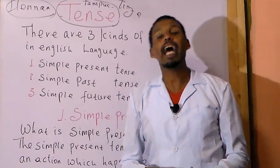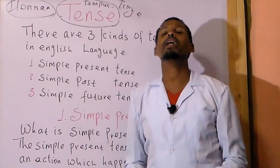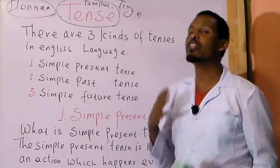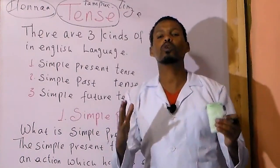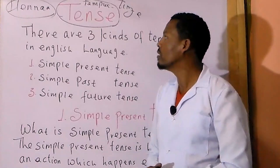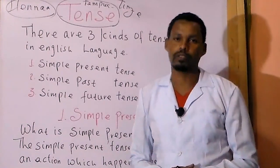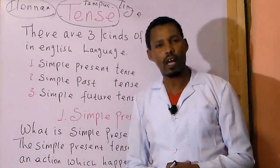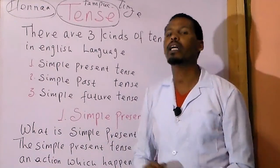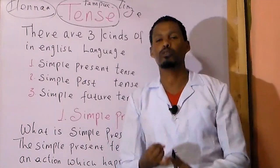That means tense, in grammar, tells us when an action occurs. As you know, there are three kinds of tenses in the English language.